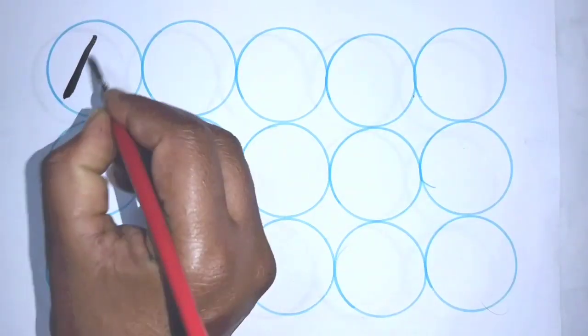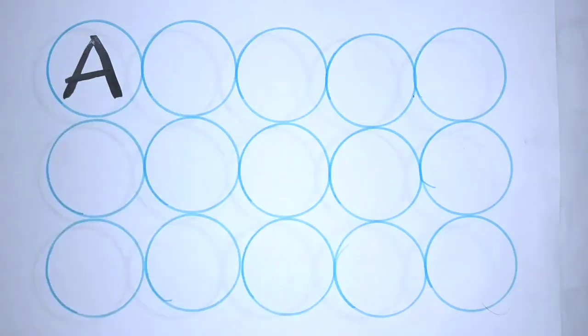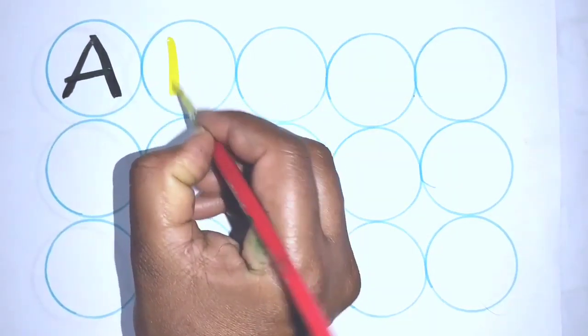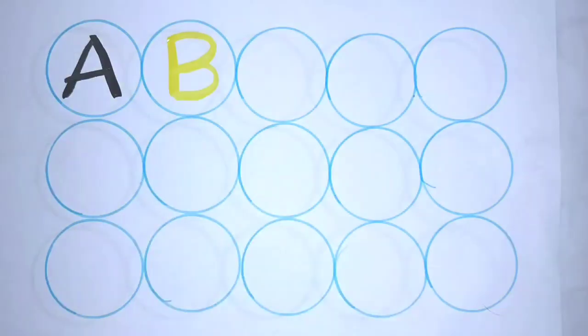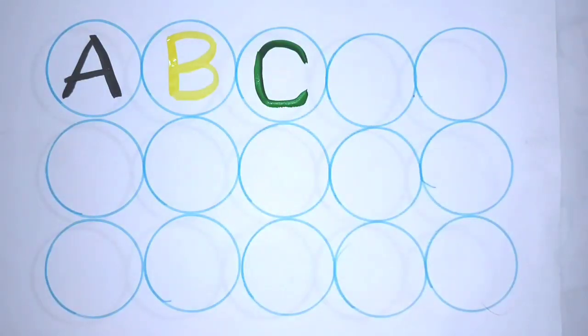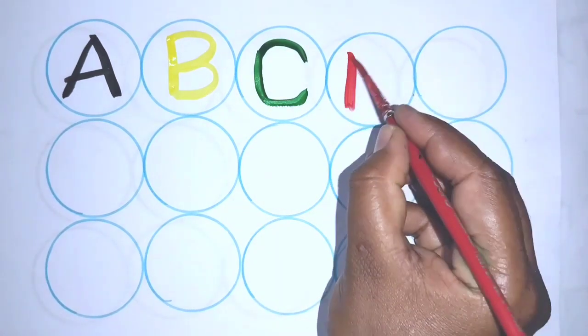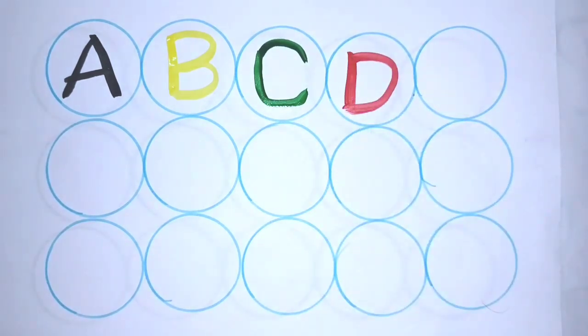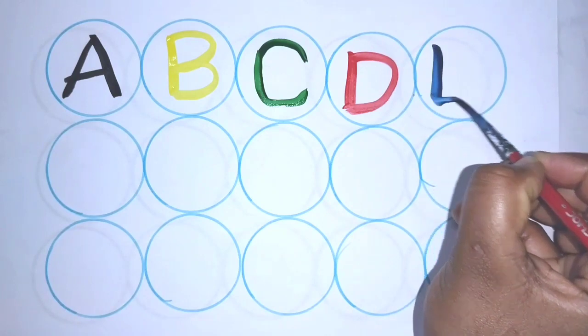A. A for apple. B. B for balloon. C for cat. D for dog. E. E for elephant.